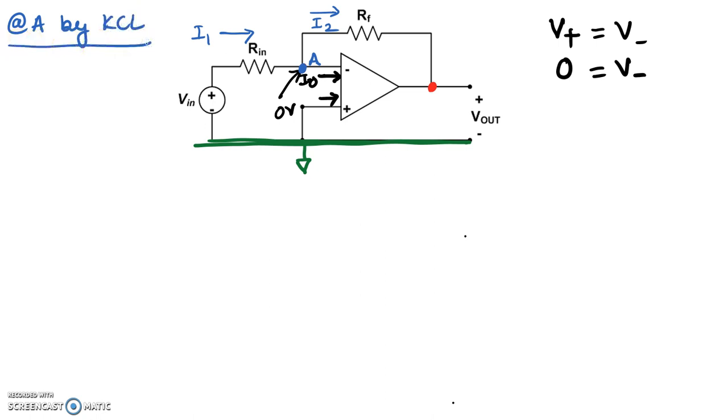I know that the sum of the current coming in. So what are the sum of the current going into node A? That's I1. And the sum of the current going out of node is I2. And this current called I0. Now remember this I0 is equal to zero because of the ideal op-amp. So that's zero because of the ideal op-amp rule. So therefore, I1 is simply equal to I2.